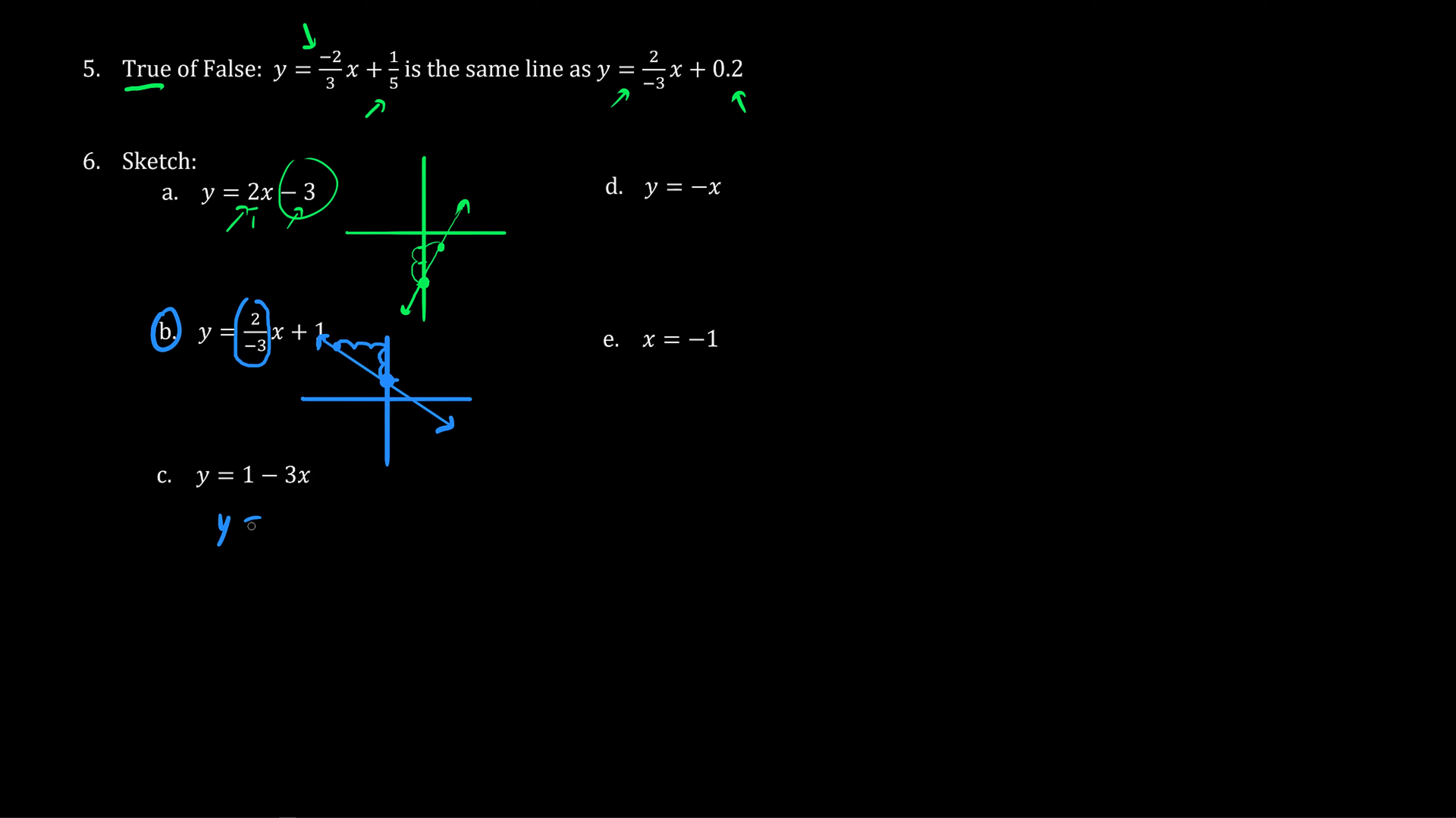As for C, we have y equals negative three x plus one. We just arrange the terms left and right. We begin with the y-intercept of one, which is here. And the slope is negative three over one, which means down three and one to the right. So it's a steep descending line.